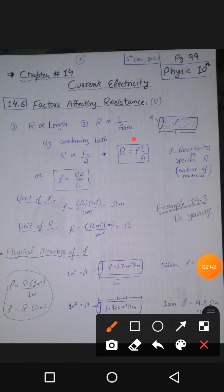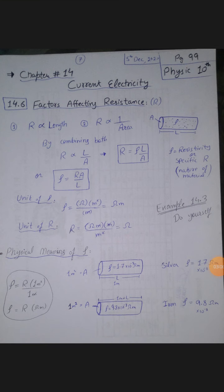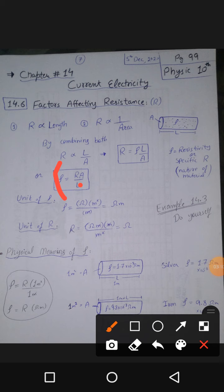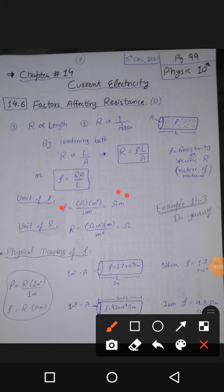From the resistance formula, if we solve for resistivity, area moves to multiply with resistance and length divides, giving us the resistivity formula. To find the unit of resistivity from this formula, substituting ohms for resistance, meter square for area, and meter for length — one meter cancels, leaving us with ohm·meters. So the unit of resistivity is ohm·meters.